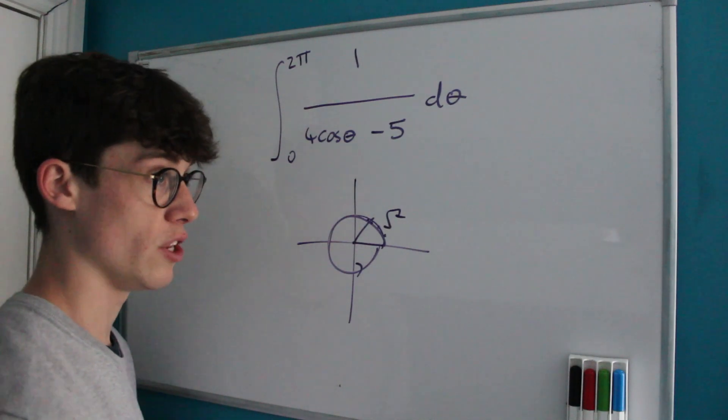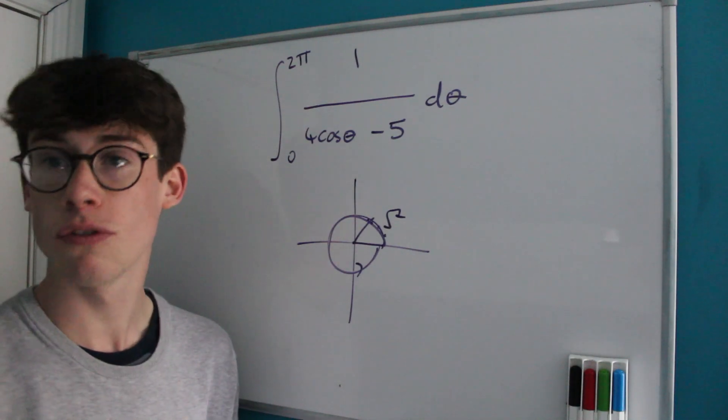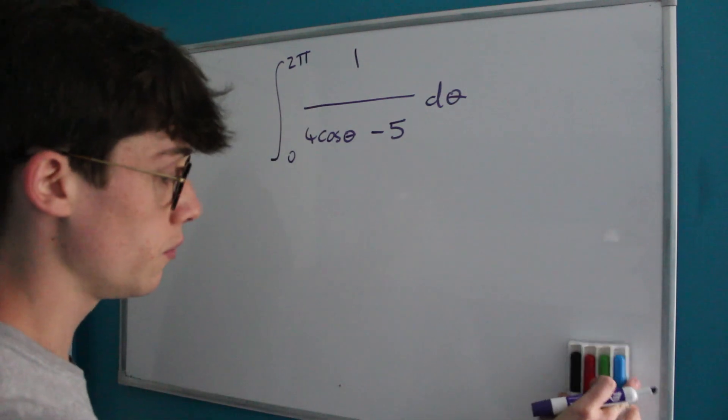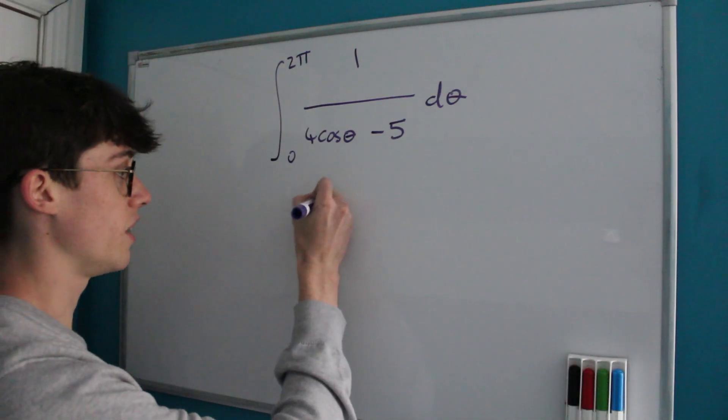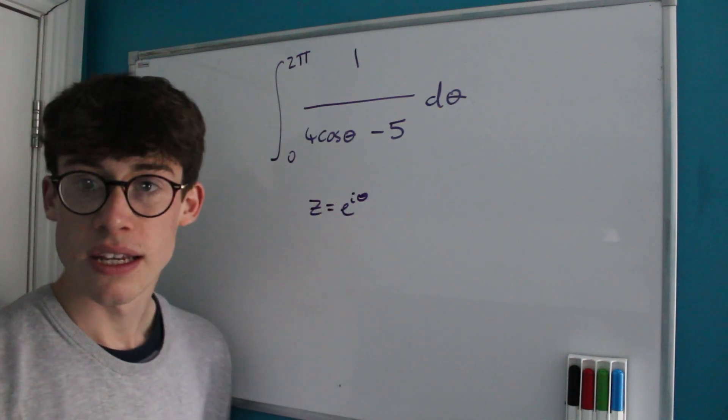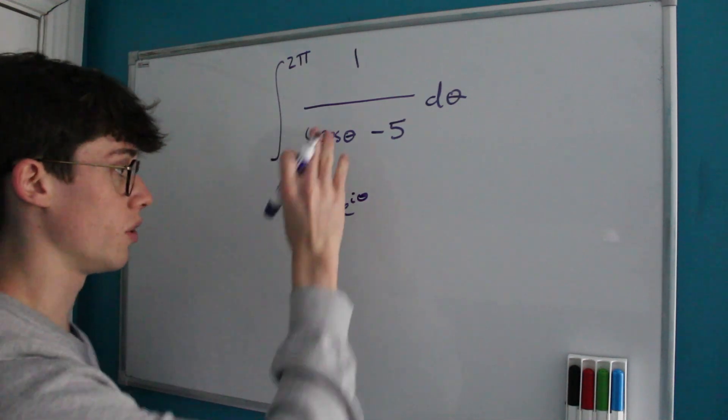And so it seems that we could represent this integral with a contour integral around the unit circle. Now what complex function do we know that goes around the unit circle? Of course it's e to the iθ. So what we're going to do is make the substitution z equals e to the iθ.